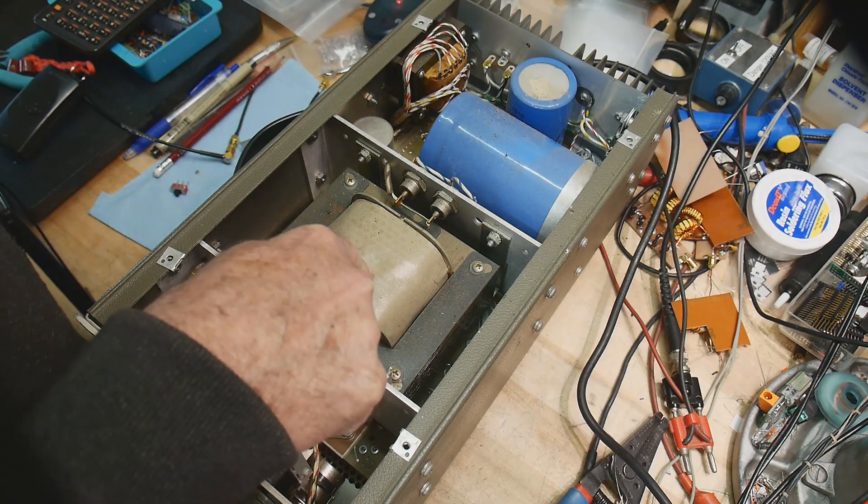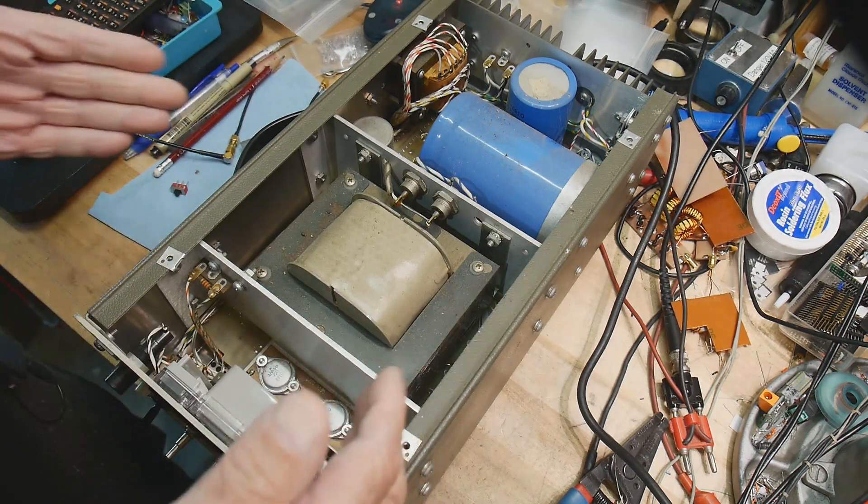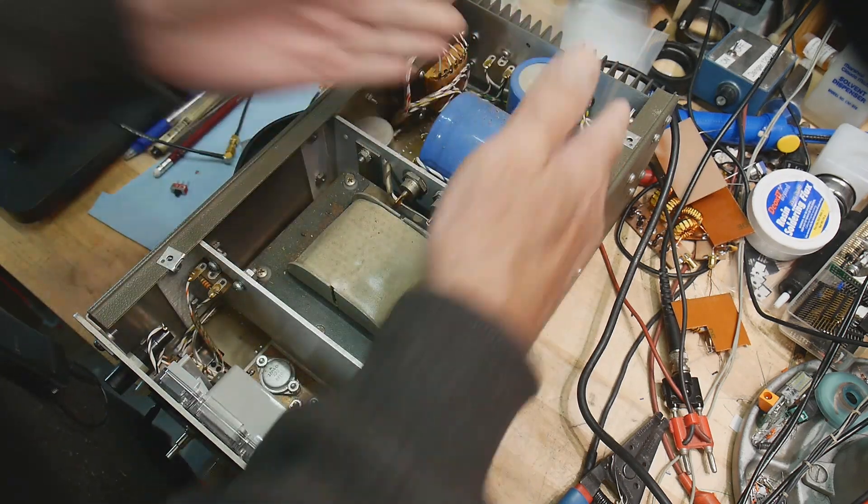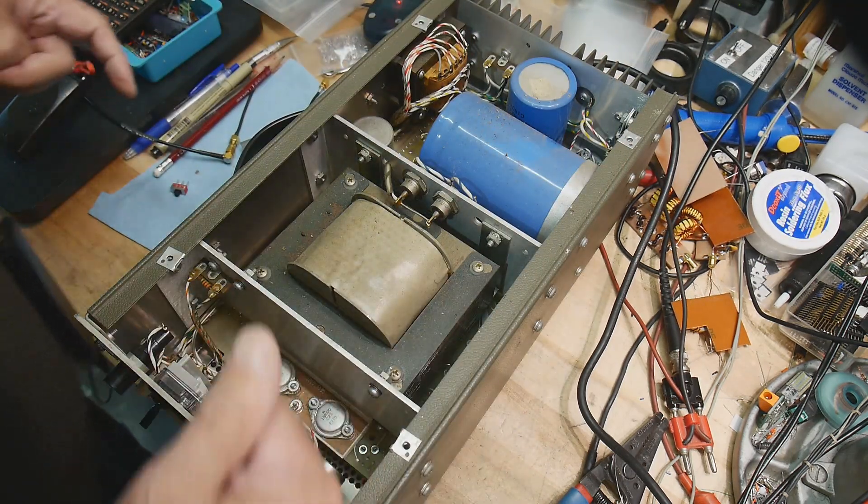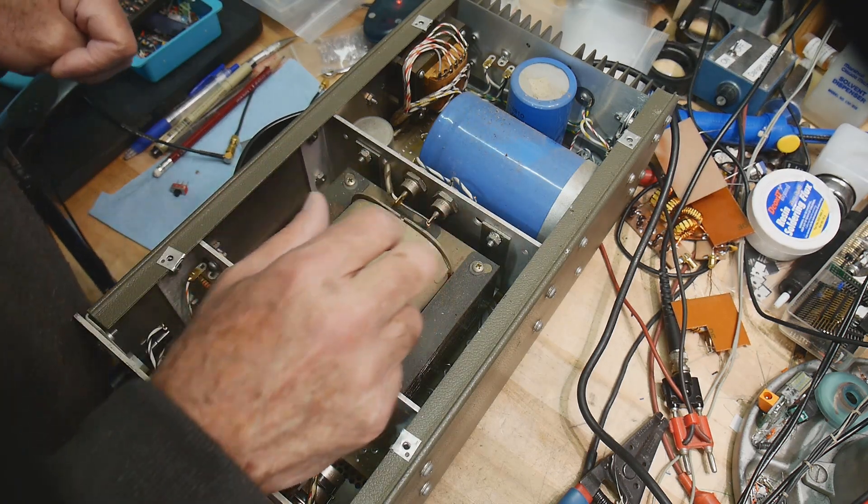There's the big transformer. So that's all that's in here really, right? Giant transformer, giant capacitor. What else do you need? You need a few other things. Nice big diodes here for the rectification.